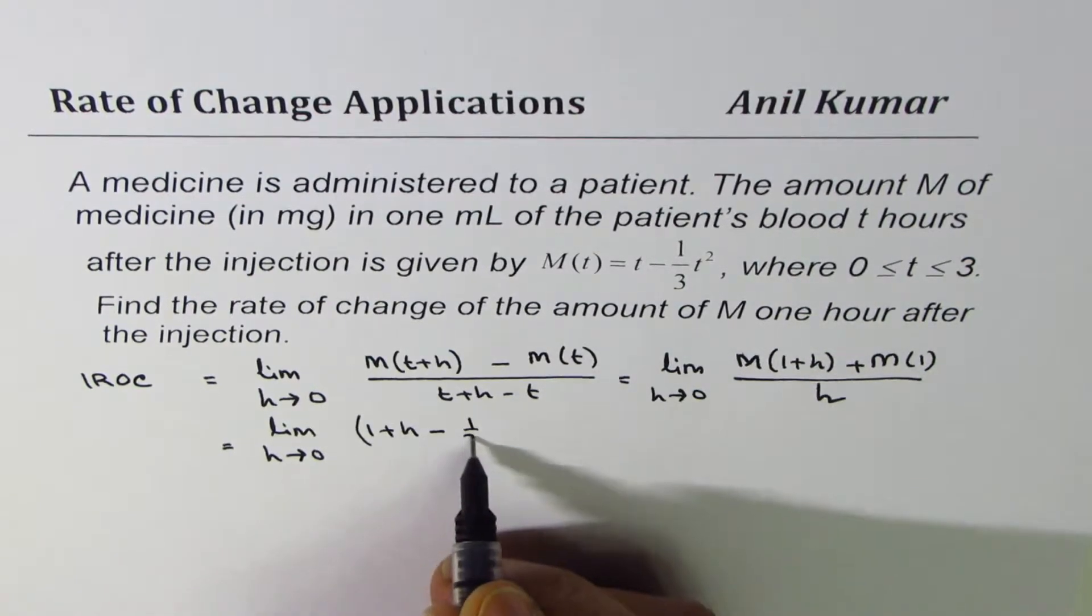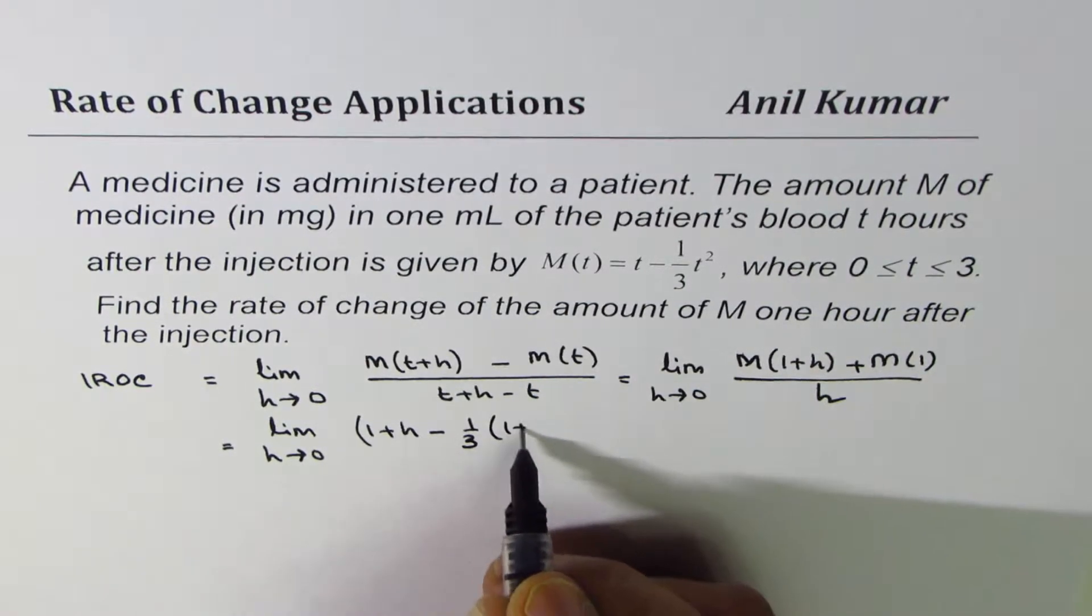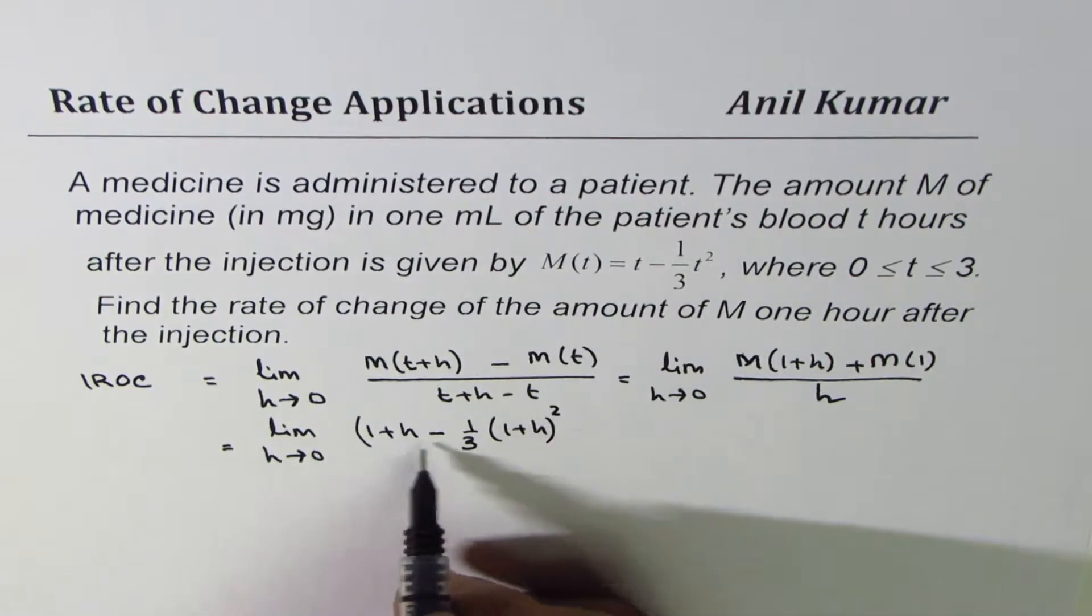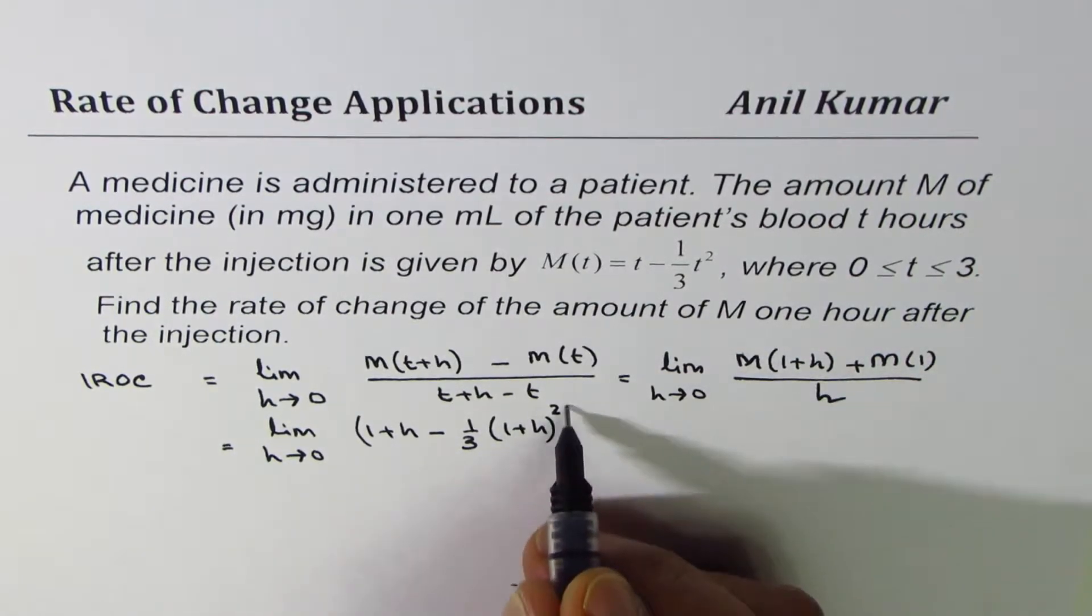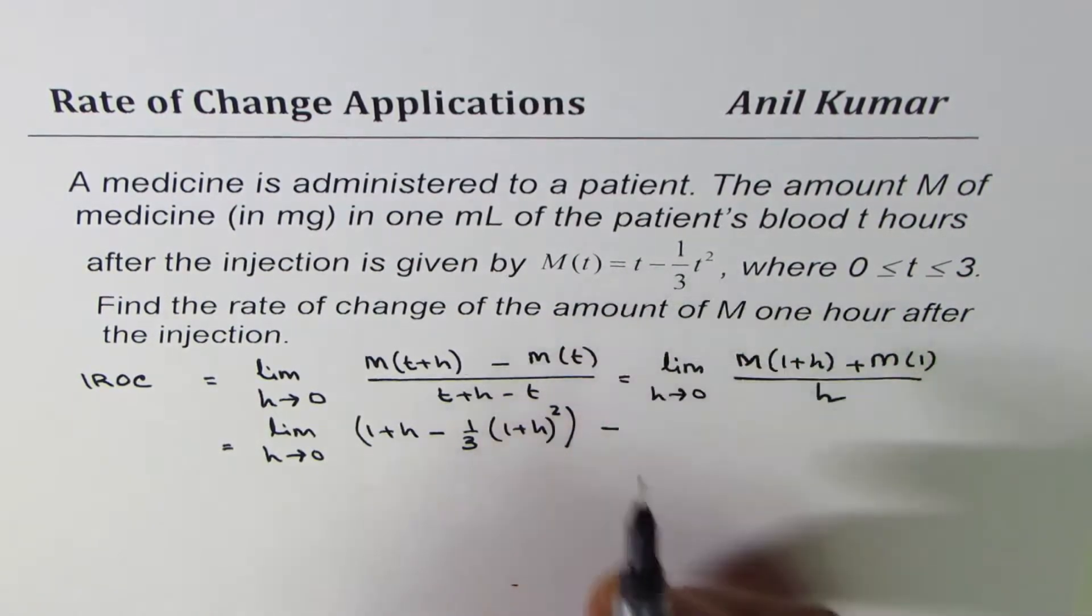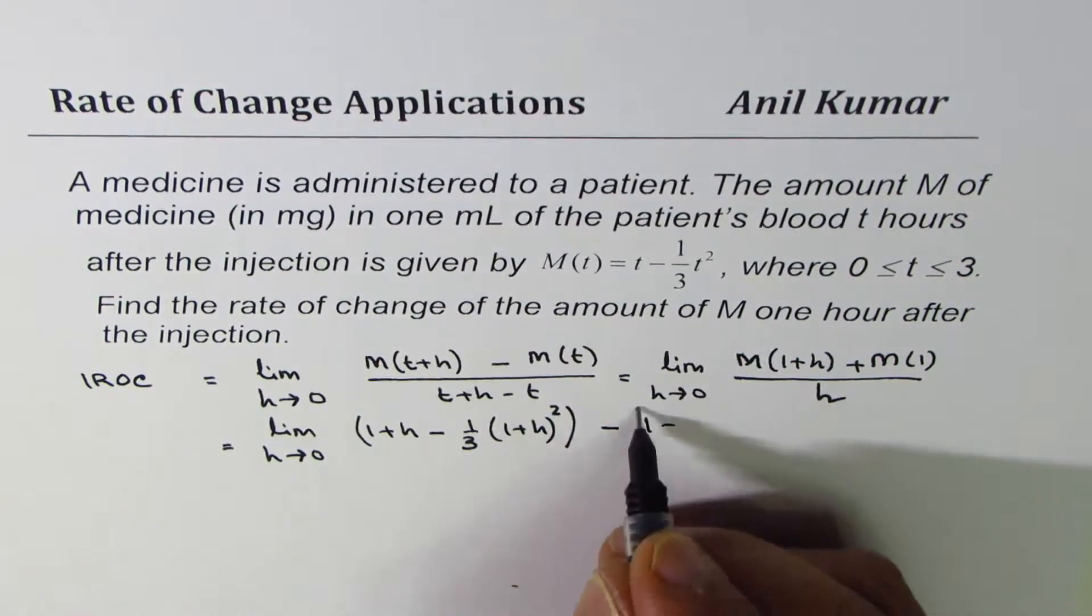Minus 1/[3(1+h)²]. Whole square it is, okay? Whole square. So this is the first term.